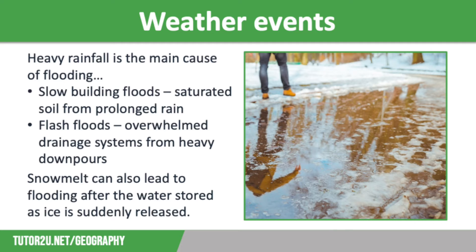Flooding from heavy rainfall can happen in two ways. Firstly, we have slow-building floods. These are caused by prolonged heavy rainfall from bands of depressions passing over the UK, particularly during winter. Continuous heavy rain leads to saturated soil that cannot absorb any more water, leading to increased surface runoff, which causes rainwater to enter the river quickly. This means that river discharge increases rapidly, making a flood event more likely.